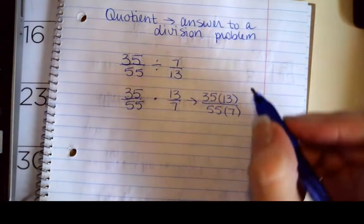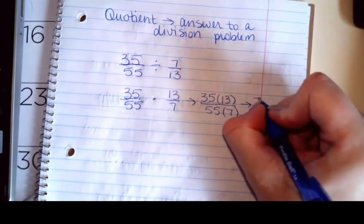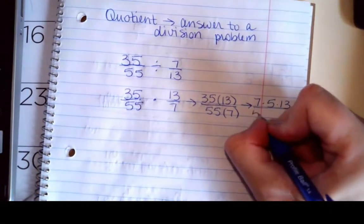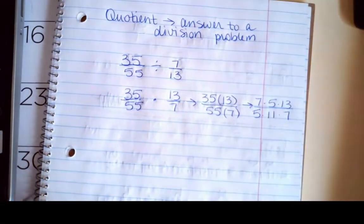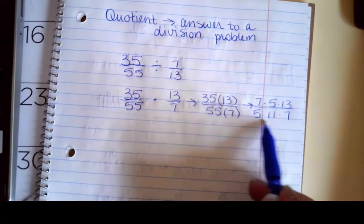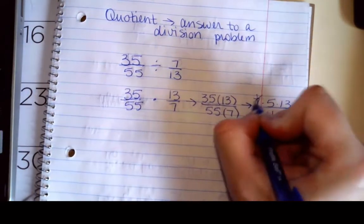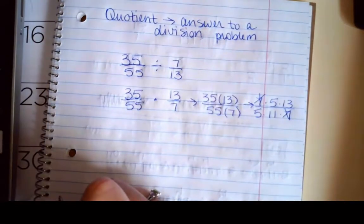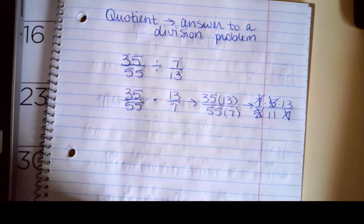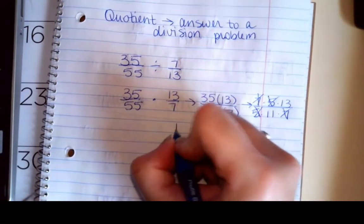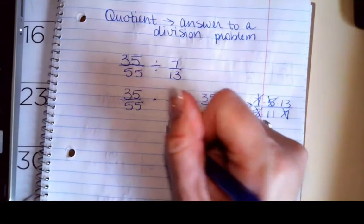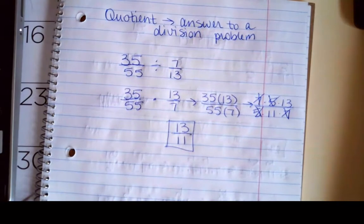Well, I know I can break down 35 to 7 and 5. So I'm going to do 7 times 5 times 13. 55 is 5 times 11, and then I've got my times 7. So here's my 35, here's my 13, here's my 55, and here's my 7. So any number divided by itself is 1. Any number divided by itself is 1. So I end up with an answer of 13 in the numerator and 11 in the denominator. So for right now, I'm okay with that being an improper fraction.